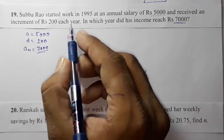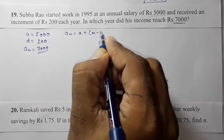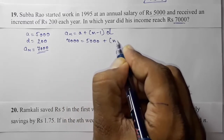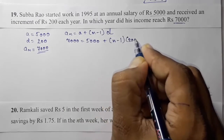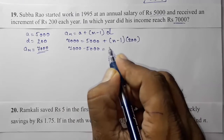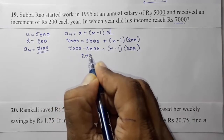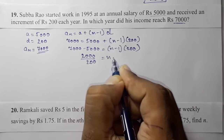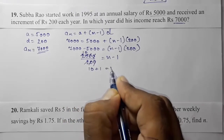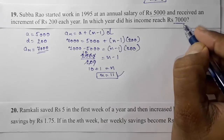We want to find the number of years for the salary to reach ₹7000. Using the formula an = a + (n−1)d: 7000 = 5000 + (n−1)×200. Subtracting: 7000 − 5000 = 2000 = (n−1)×200. Dividing both sides by 200 gives n − 1 = 10, so n = 11. Therefore, in the 11th year her salary will reach ₹7000.